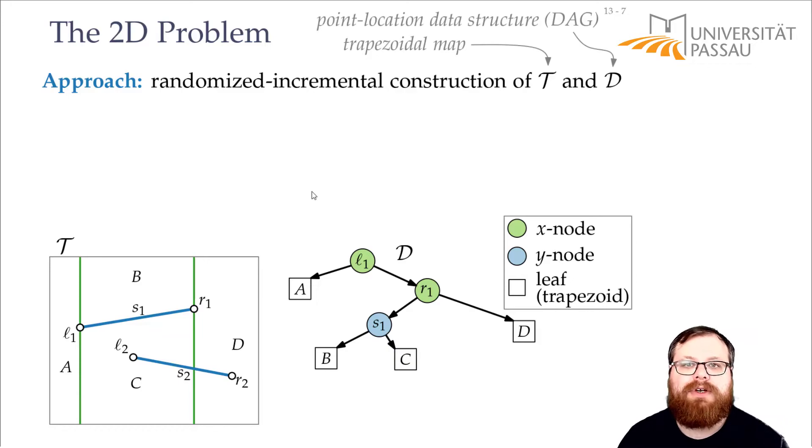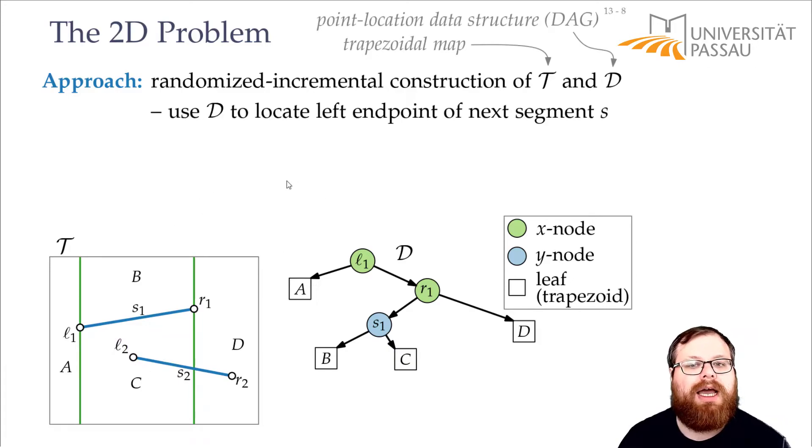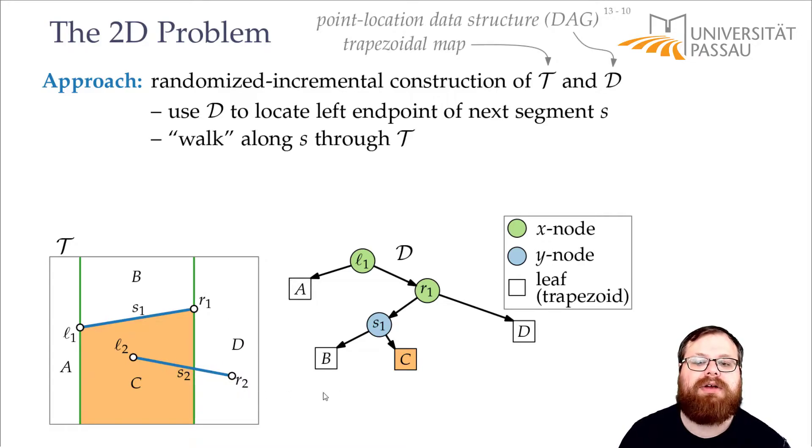So let's do something very similar. We take the left point of the segment, and we use our data structure to locate where it lies in. And then we figure out it lies in the trapezoid C. And now we just walk along this segment through all the trapezoids in the trapezoidal map until we find the right endpoint. In this case, it's just this trapezoid D.